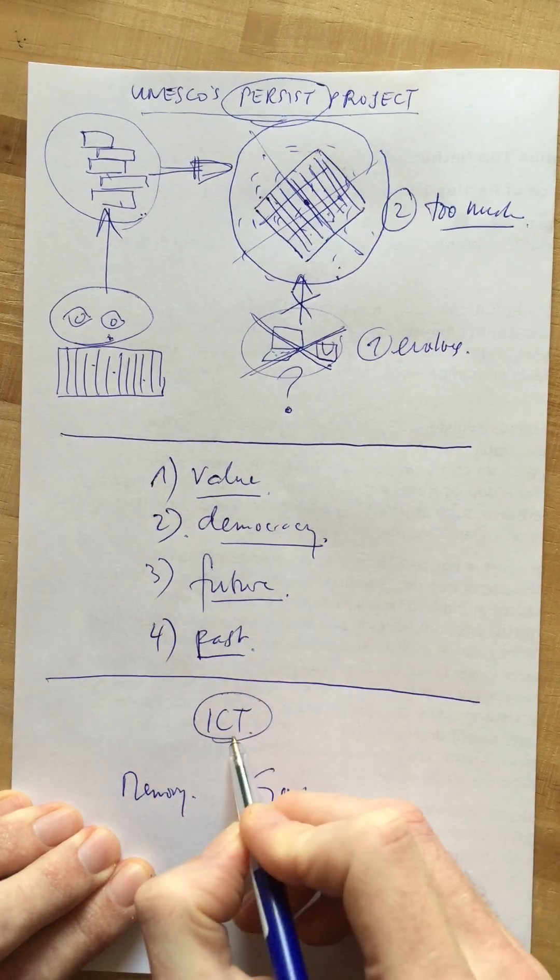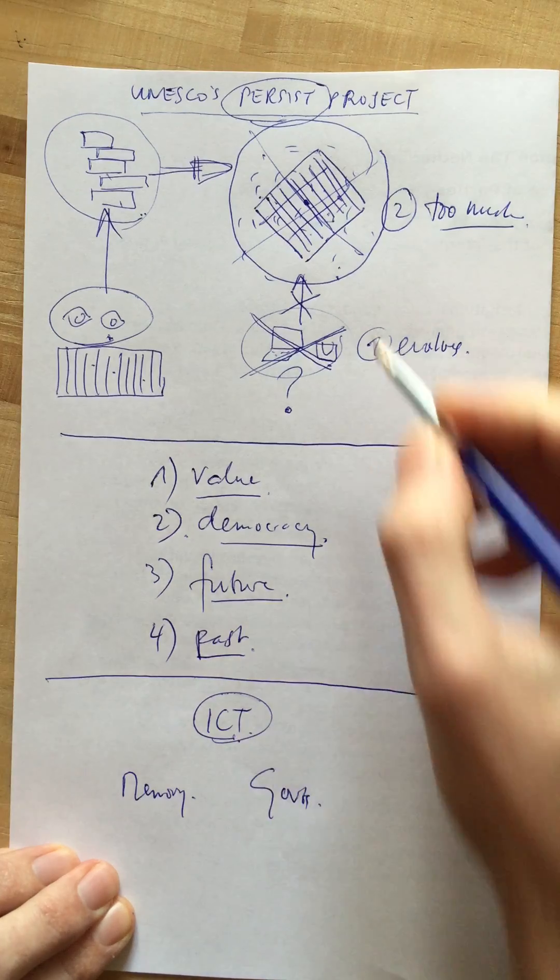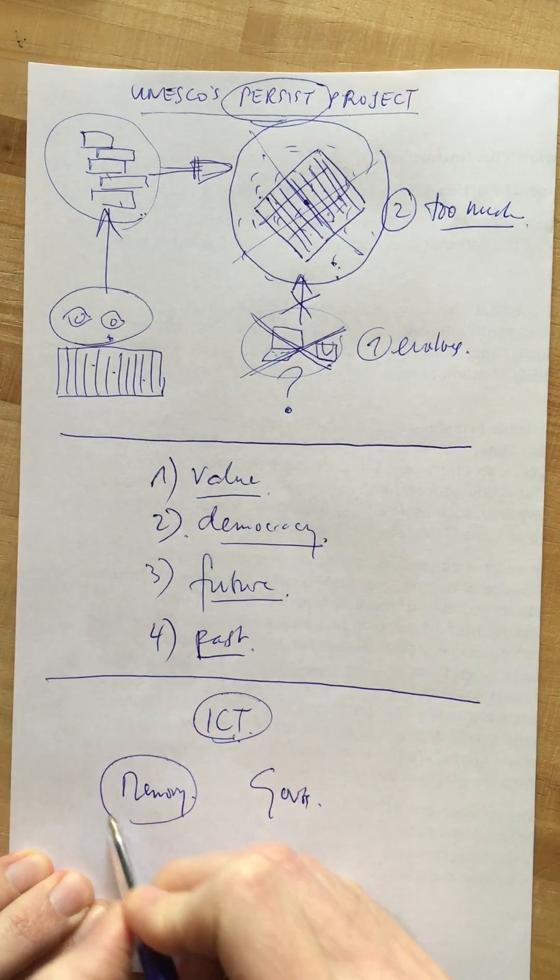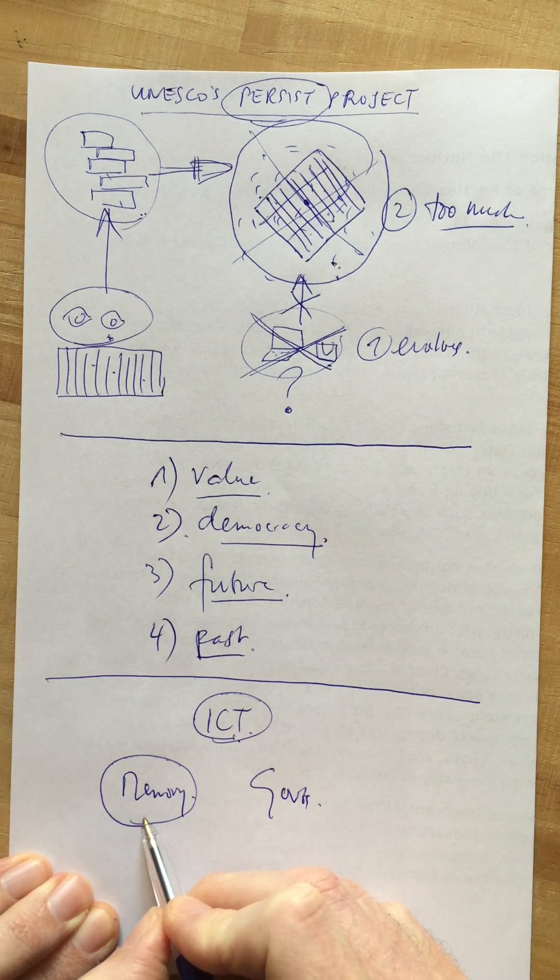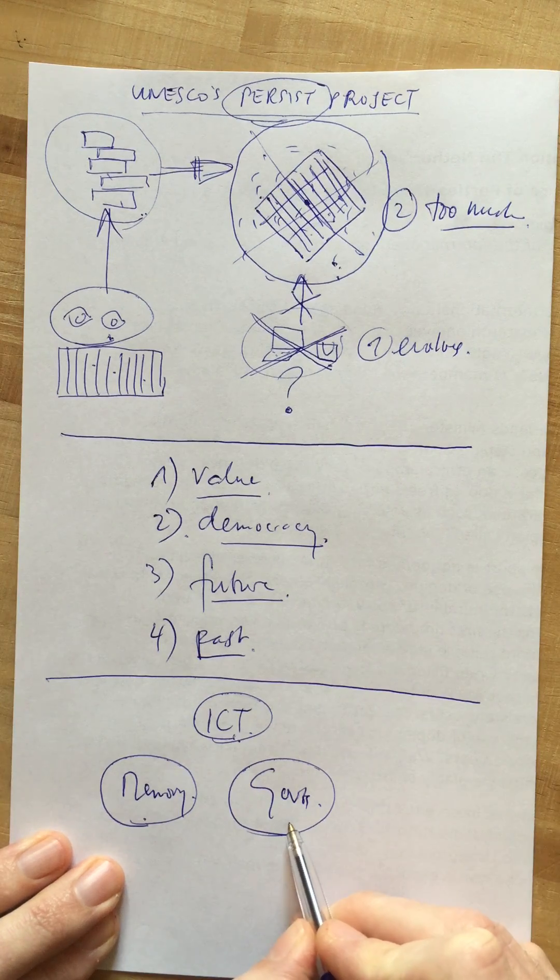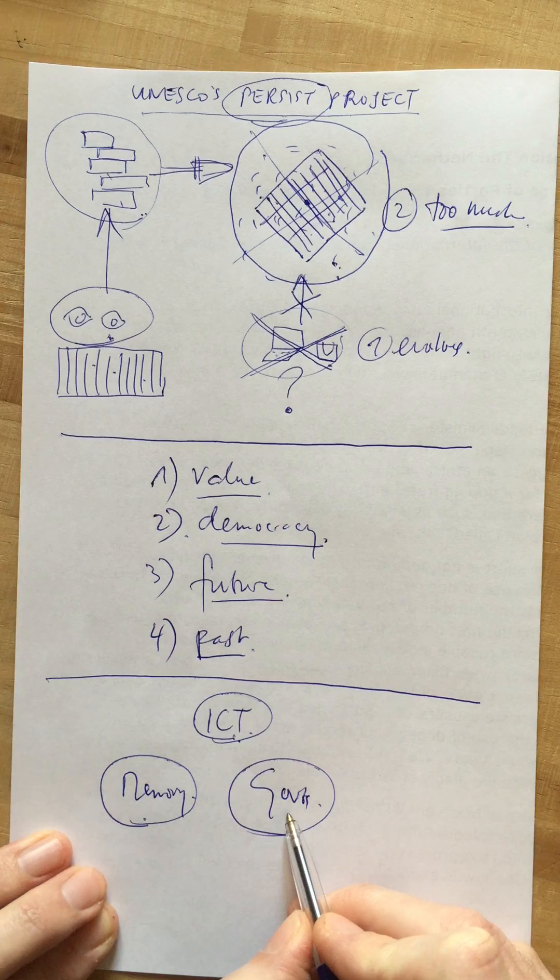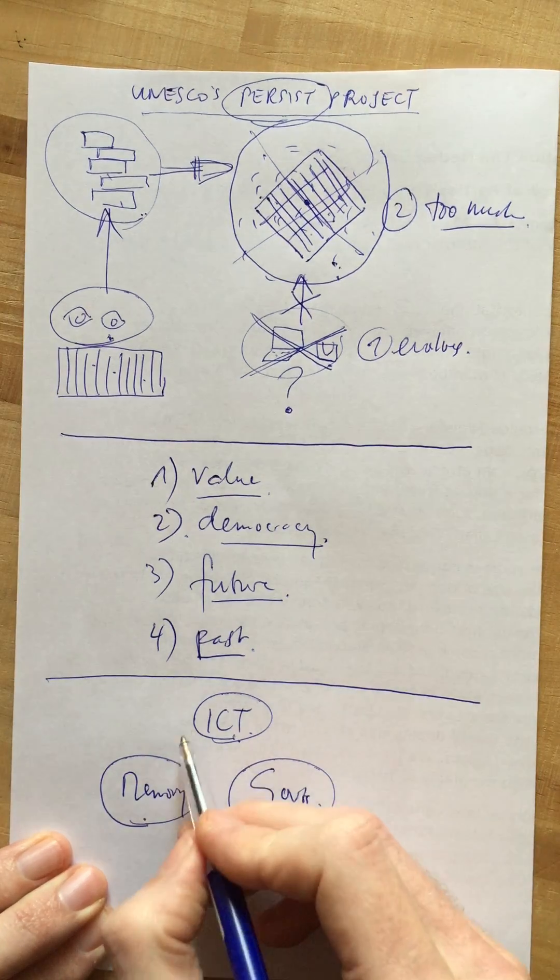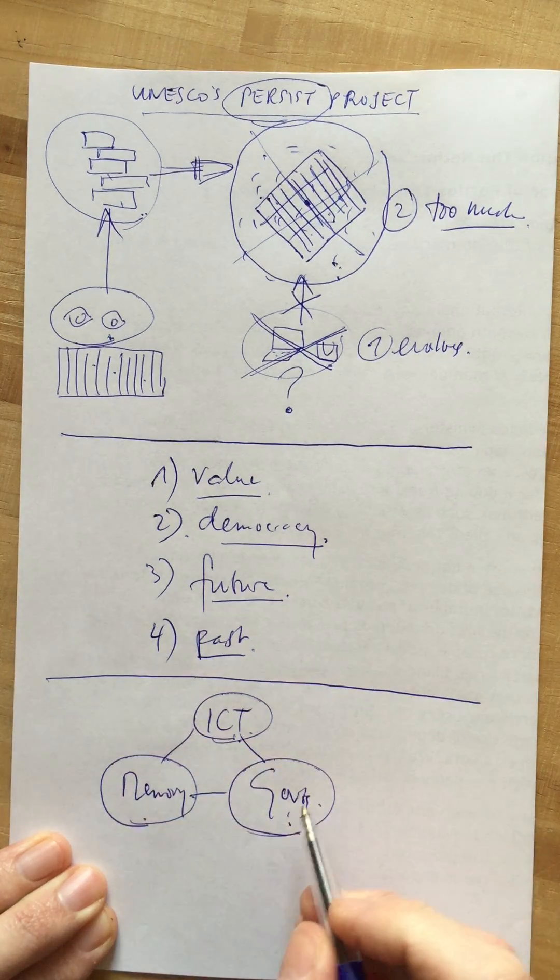It's the ICT industry, it's the memory institutions, and the governments. The ICT industry produces the software we need to produce digital information. Our memory institutions then preserve that digital information and keep it accessible. And the governments support and facilitate the production of digital information and the preservation of it.